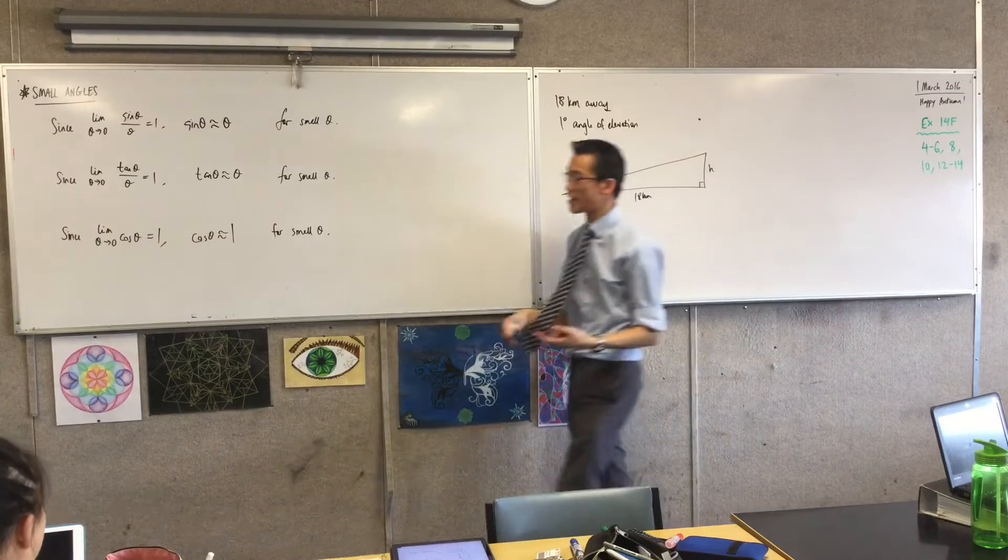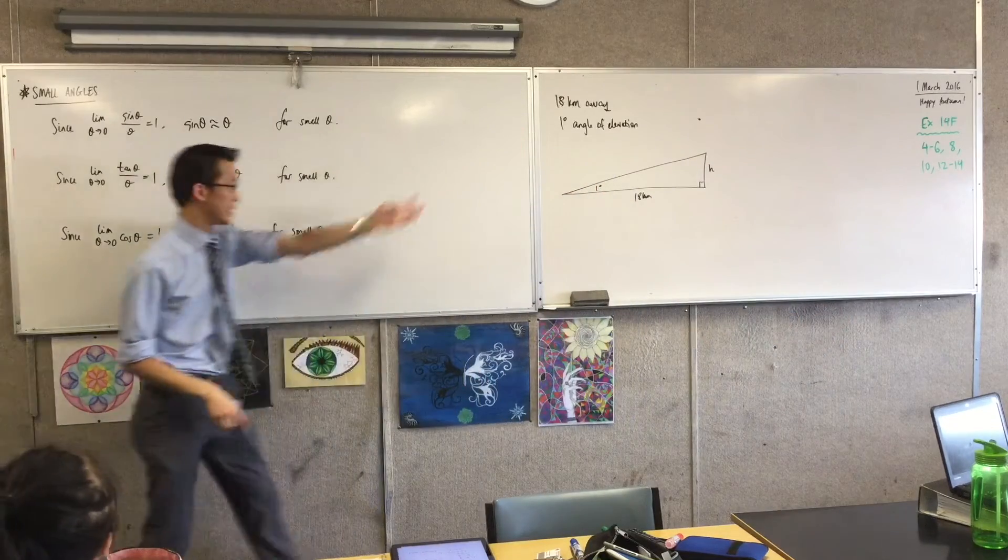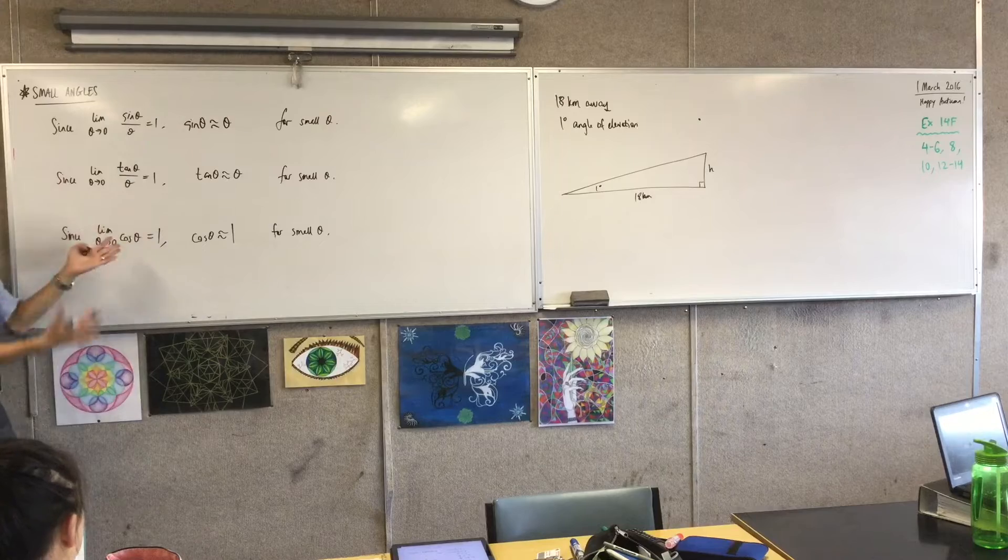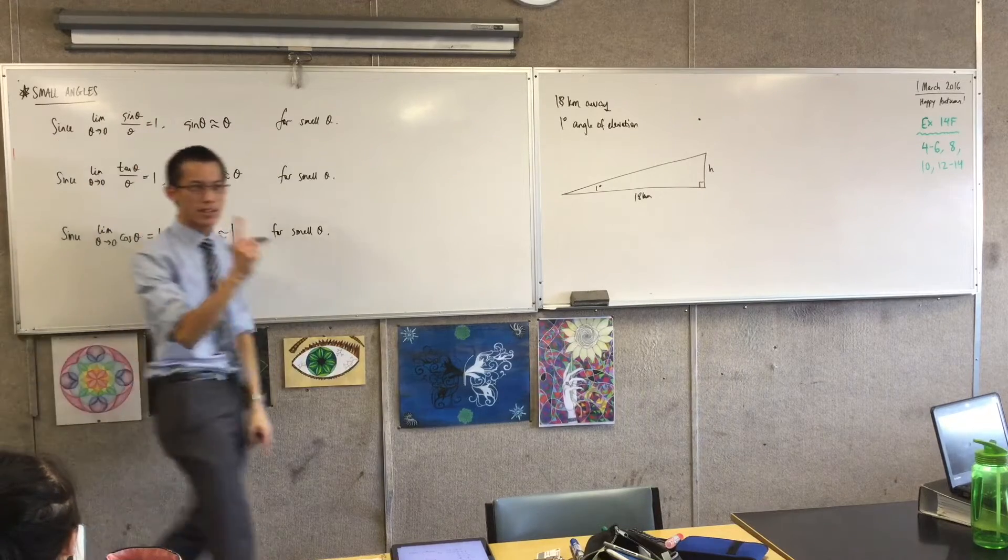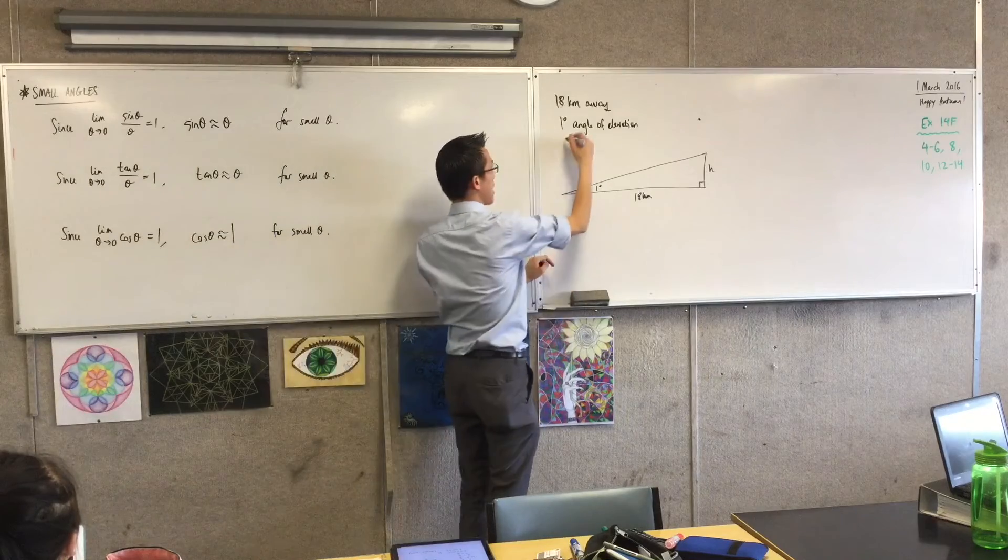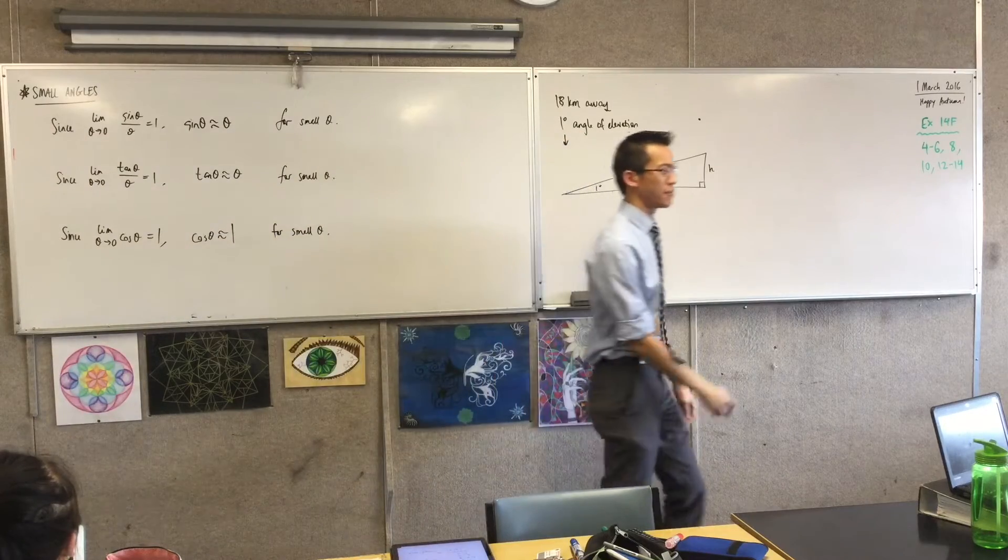Now, remembering that I do tend to measure things in degrees, but all of this only functions in radians. Like, that's how this all was born. So the first thing I need to do is to convert that. What's one degree in radians?